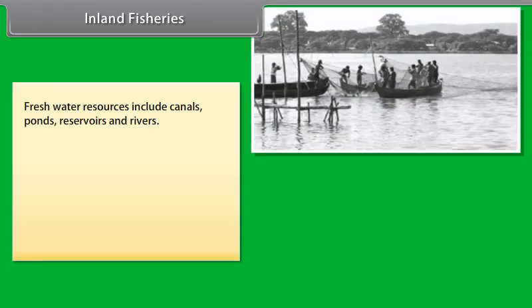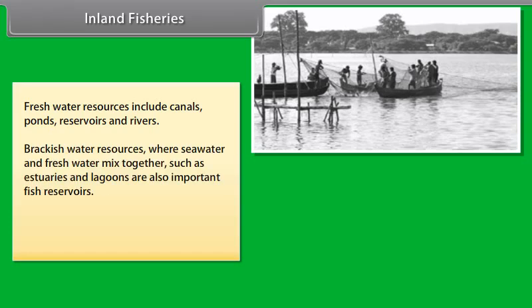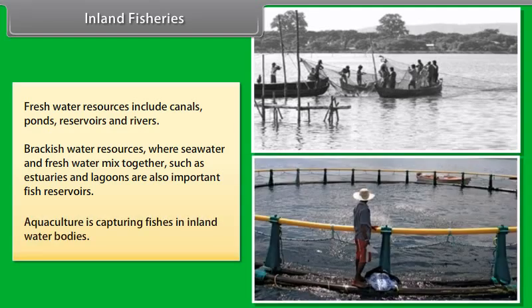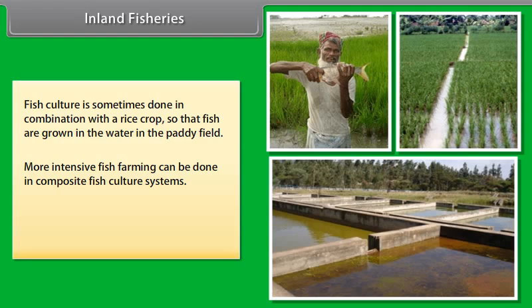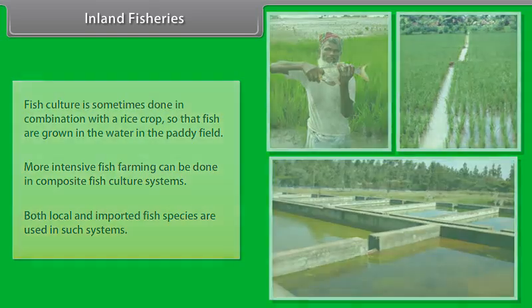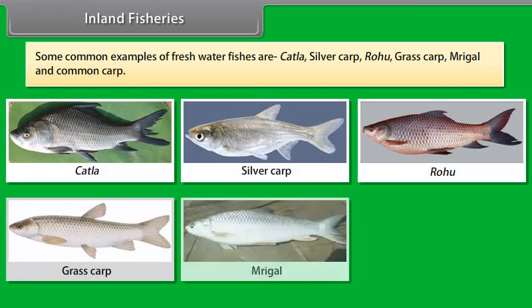The demand for marine fish can be met by mariculture. Fresh water resources include canals, ponds, reservoirs and rivers. Brackish water resources where sea water and fresh water mix together, such as estuaries and lagoons, are also important fish reservoirs. Aquaculture is capturing fishes in inland water bodies. Fish culture is sometimes done in combination with the rice crop so that fish are grown in the water in the paddy field. More intensive fish farming can be done in composite fish culture systems. Both local and imported fish species are used in such systems. Some common examples of fresh water fishes are Katla, silver carp, Rohu, grass carp, Mrigal and common carp.